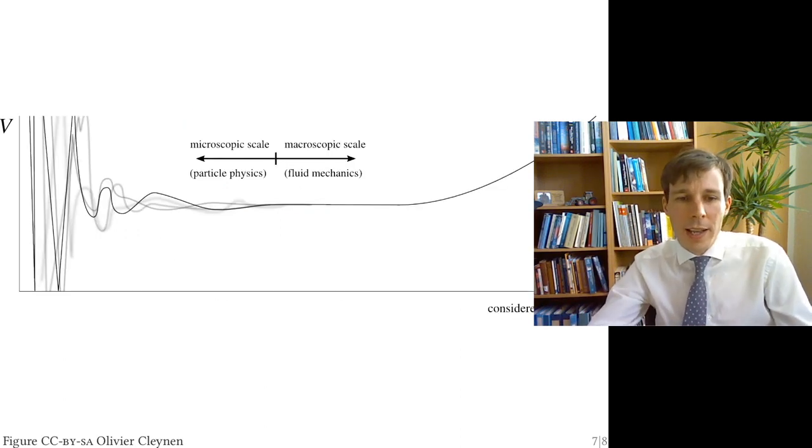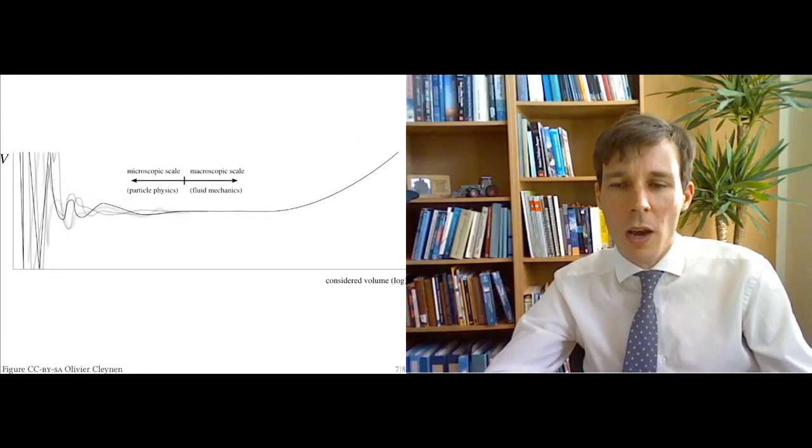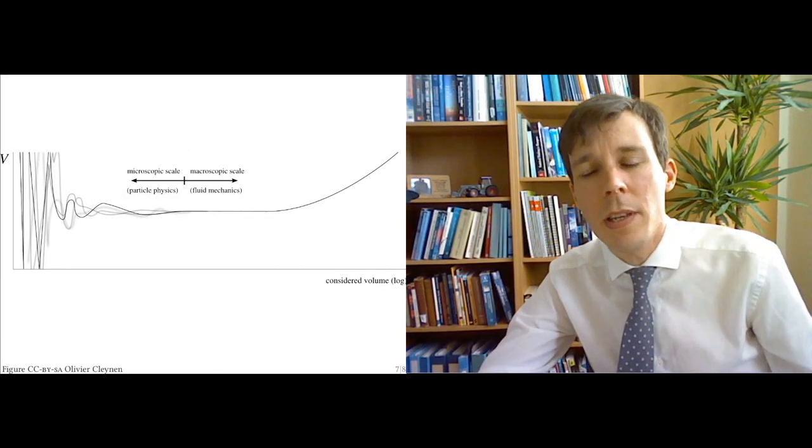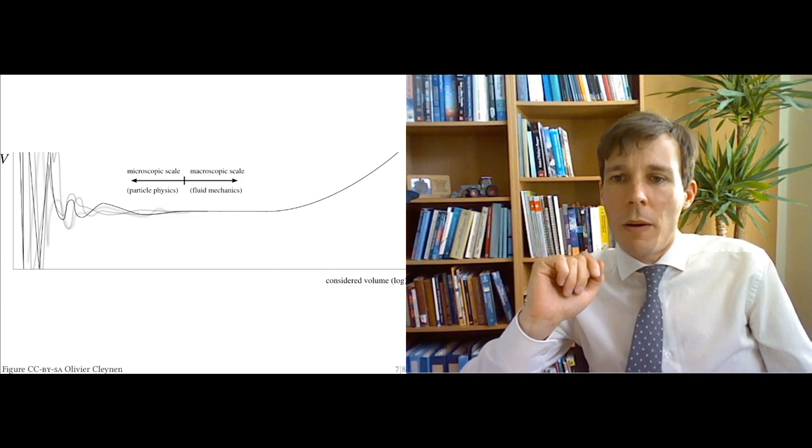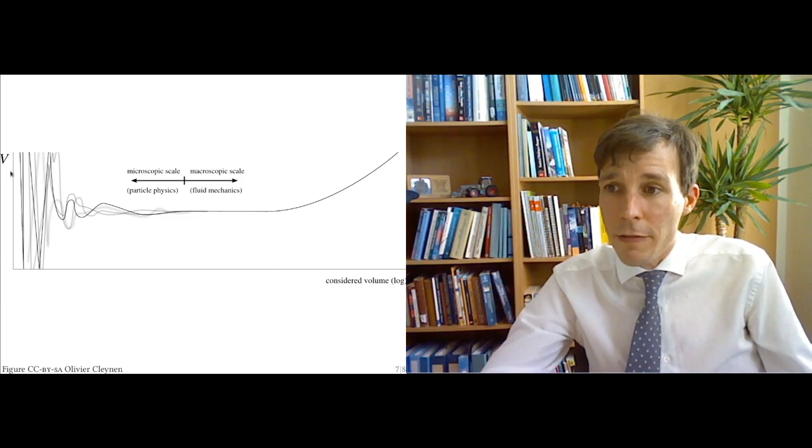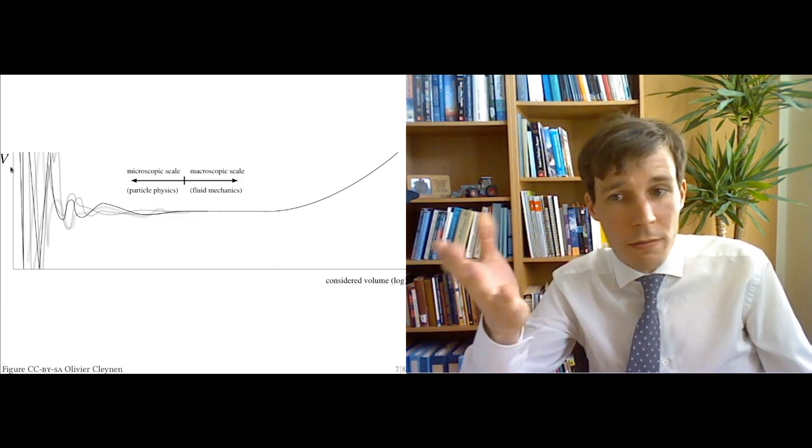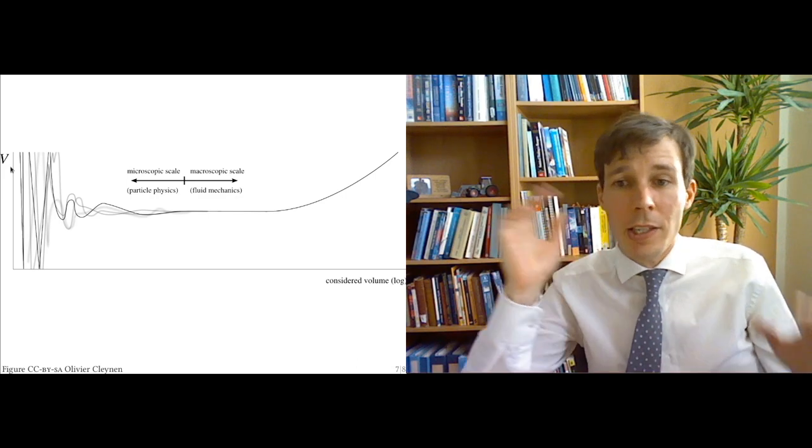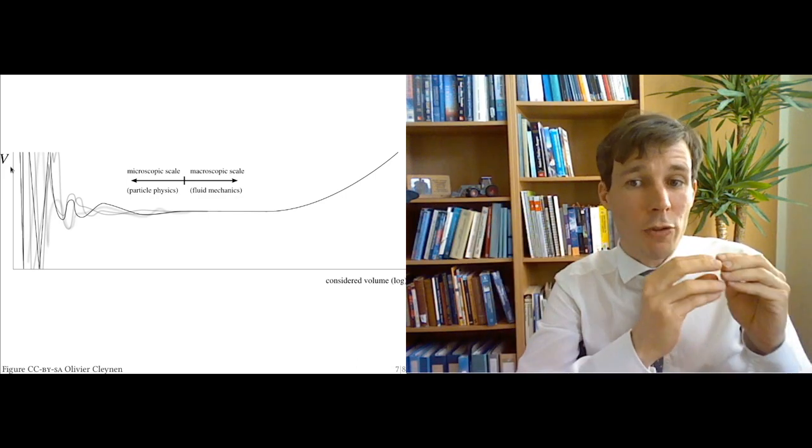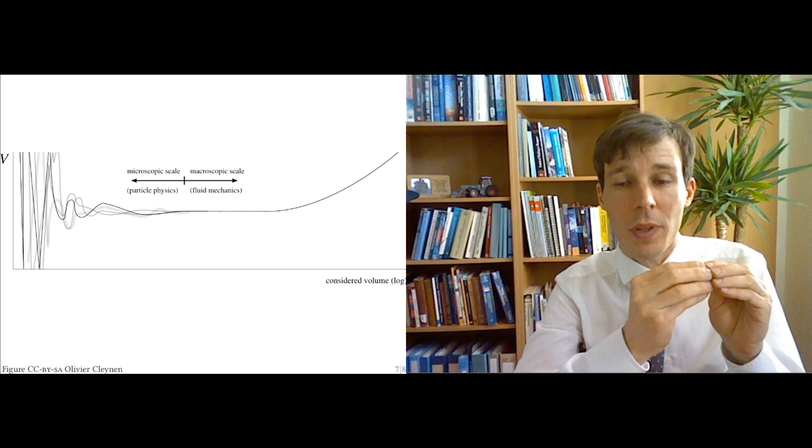And so this brings us to this last diagram here, which is quite important. In this diagram, you see a property. This is, in this case here, velocity, but it could be temperature. We're going to pretend this is temperature, as you reduce the volume of the measurement volume for that property.